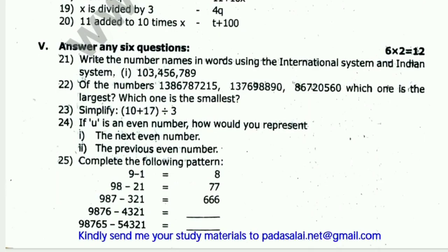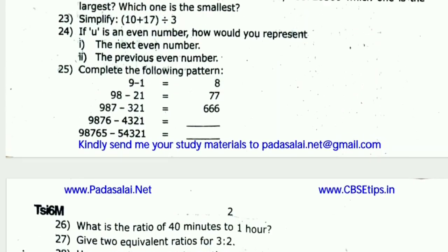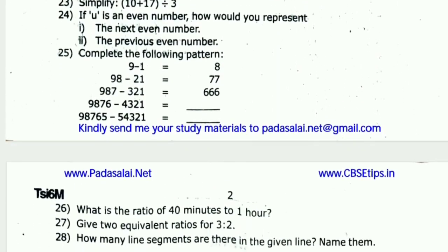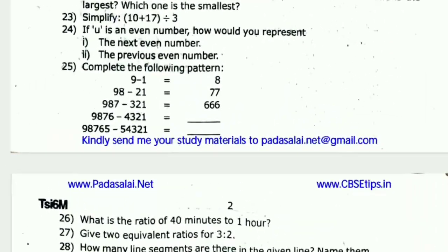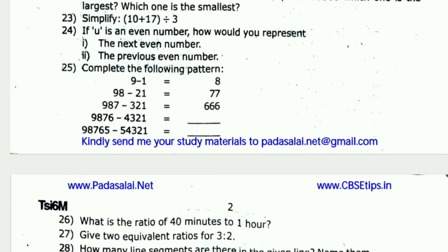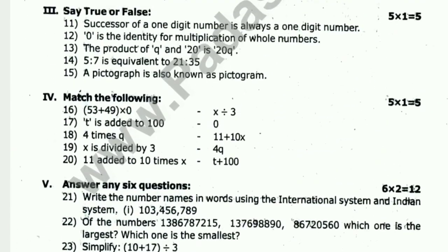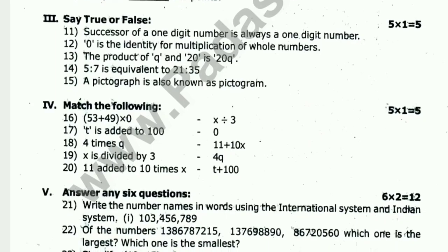2 marks section. If you say true or false, you have 9 points; you have 6 points. Questions 21 and 22.